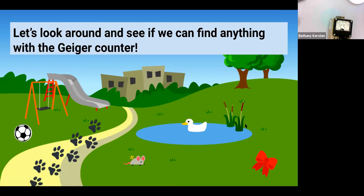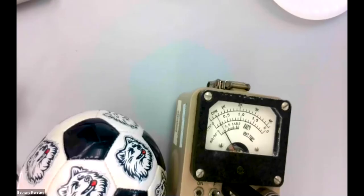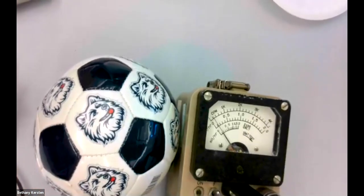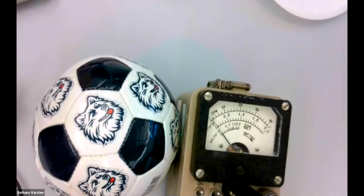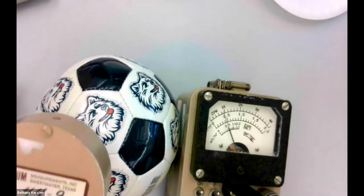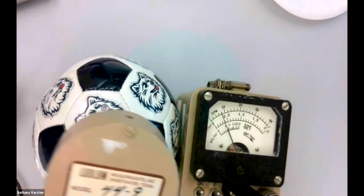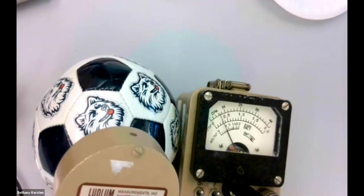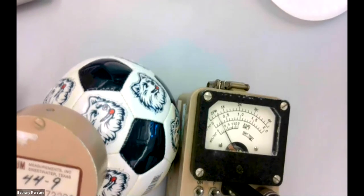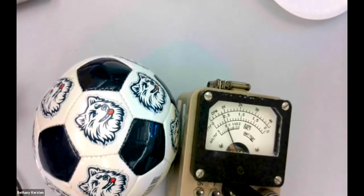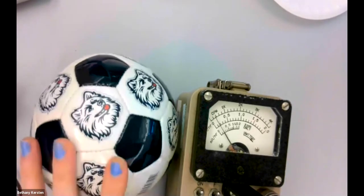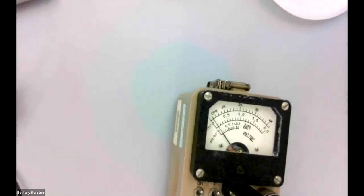So we already found the paw print that's radioactive and the mouse. Oh, someone's saying the ball. Where's the ball? Yeah, so we can look at the soccer ball next. All right. So we have the soccer ball. I'll turn the sound back on. Let's test to see if this is radioactive. Do we see it go up when the sensor is by the ball? Not really, no. Not really. So this is not radioactive.